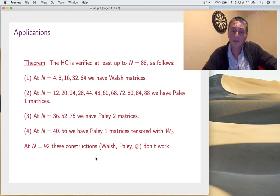With this now, let's go back to the Hadamard conjecture. We can verify it up to 88. The idea is that you have all these Walsh matrices, when you don't have them use Paley 1. If Paley 1 doesn't work, Paley 2. And finally, as the last thing you can use, you can tensor. Paley 1 or W2 actually fill the gaps at 40 and 56, and all these numbers - these are multiples of 4 up to 88. The problem however is that 92 doesn't work.